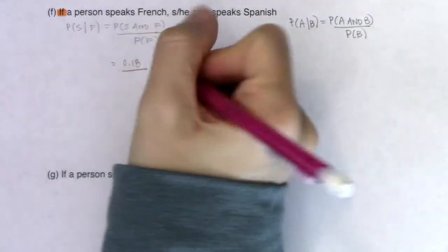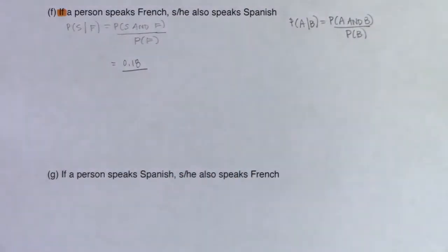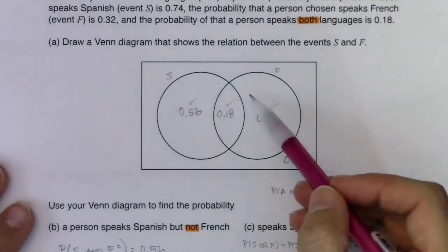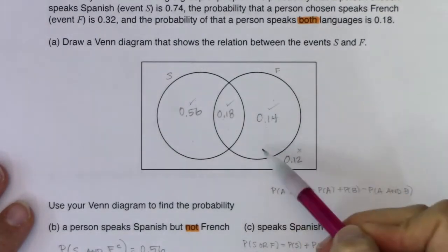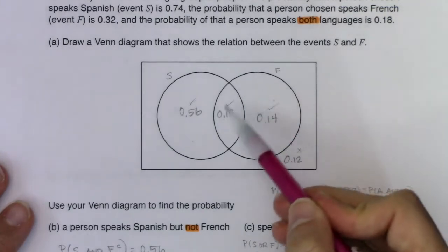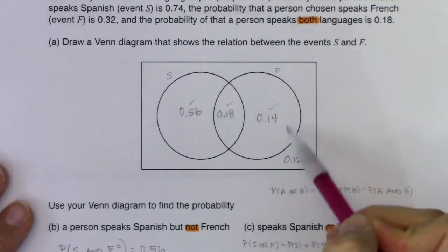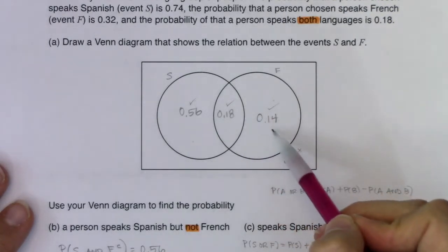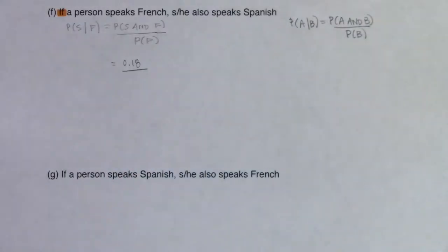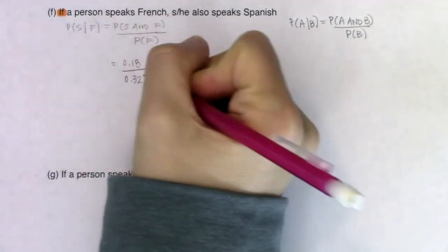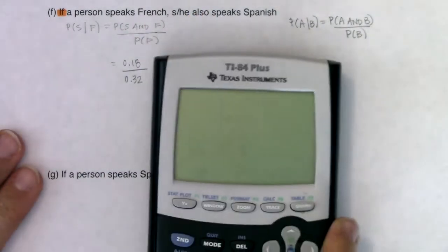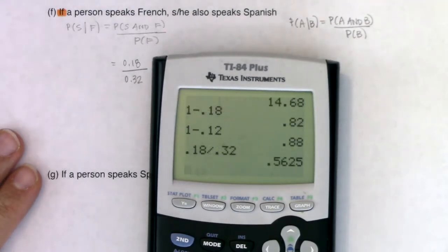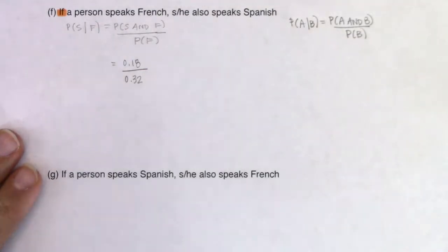My denominator is the probability that a person speaks French. Now be careful — the probability that a person speaks French is not 14%; that is just the right moon. You need the entire circle. So what is the probability that a person speaks French? 32% — 18 plus 14. So I'll put 0.32 in the denominator. We've got 18% divided by 32%, and we are looking at about 56%.